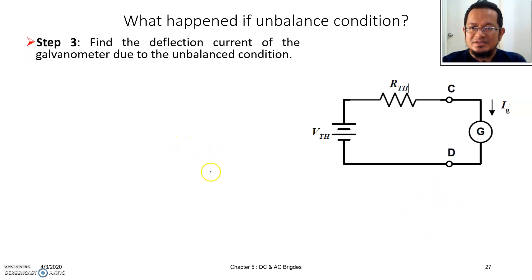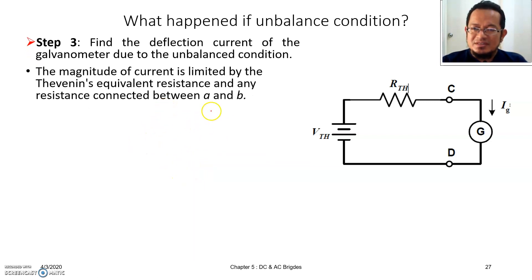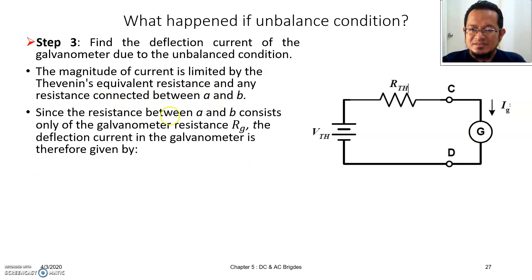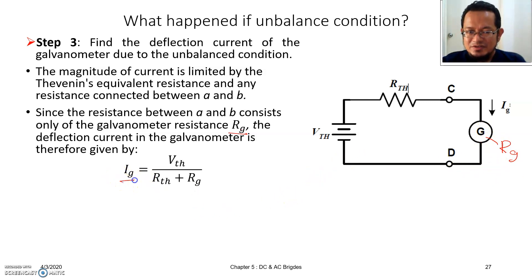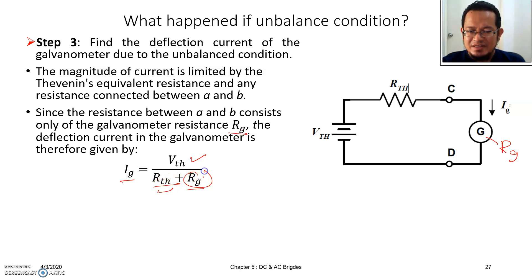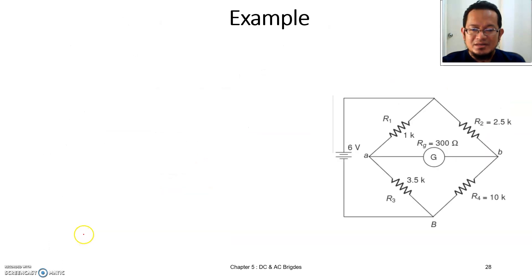The last step is to find the deflection current through the galvanometer. The magnitude of current is limited by the Thevenin equivalent resistance and any resistance connected between A and B. Since the resistance between A and B consists of only the galvanometer resistance Rg, the galvanometer current IG is simply the Thevenin voltage divided by the total of Thevenin resistance plus the internal resistance of the galvanometer Rg. We are going to continue in the next video with some examples on this section. See you then.